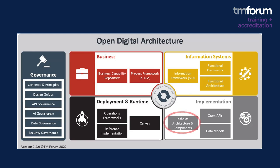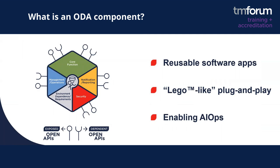ODA Components are part of the implementation architecture quadrant of ODA. The ODA Components are interoperable software building blocks that run a service provider's business. Traditionally, these have been business support systems and operations support systems, BSS and OSS, but virtualized network functions can also be treated as ODA Components.